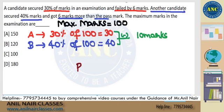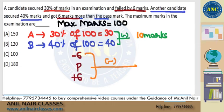But according to the question, what is the actual difference? Let the passing marks be P. I failed by 6 marks, so I got P minus 6. My friend got 6 marks more than passing, so he got P plus 6. The actual difference is (P+6) minus (P-6), which is 12 marks.